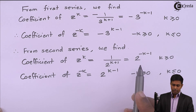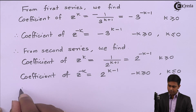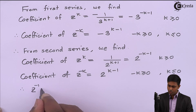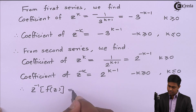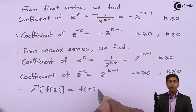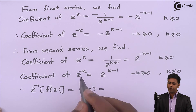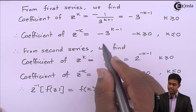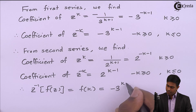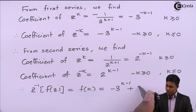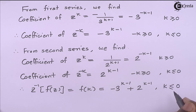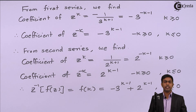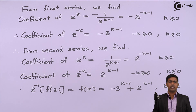Taking both series together, the inverse z-transform of F(z), which is f(k), equals the coefficient of z^(−k): f(k) = −3^(k−1) + 2^(k−1) for k ≤ 0. This is the required inverse z-transform. Thank you.